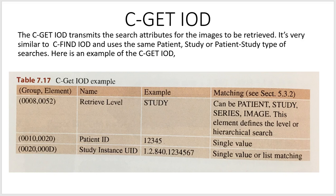The C-GET IOD is very similar to the C-FIND IOD and uses the same patient, study, or patient-study type of searches. Here's an example of a C-GET IOD — the retrieve level is at the study level. This is the patient ID, so it's looking for a study that belongs to this patient and this particular study instance UID.